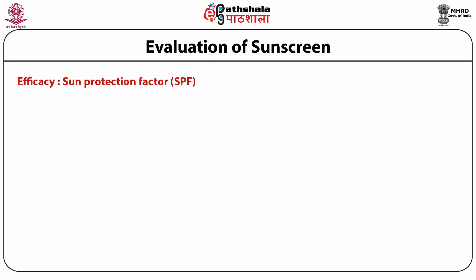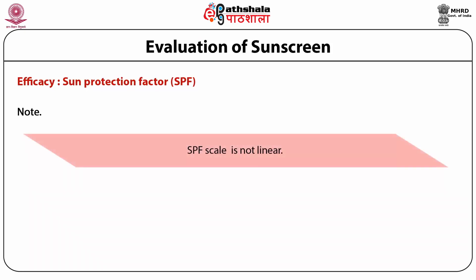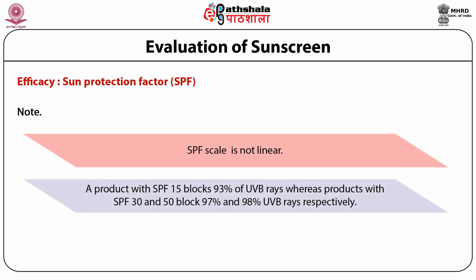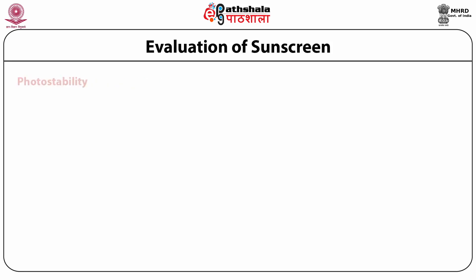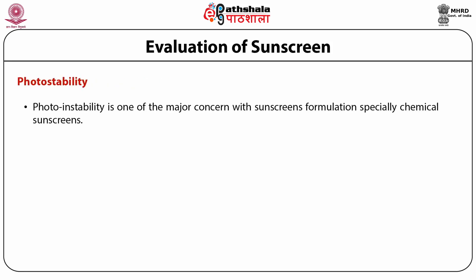One important point: the SPF scale is not linear. A product with SPF 15 blocks 93% of UVB radiation, whereas products with SPF 30 and SPF 50 block 97% and 98% of UVB radiations respectively. Photostability is one of the major concerns with sunscreen formulations, especially chemical sunscreens.